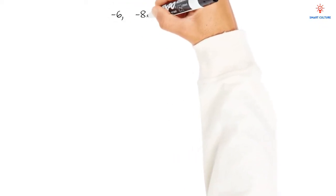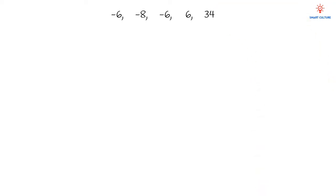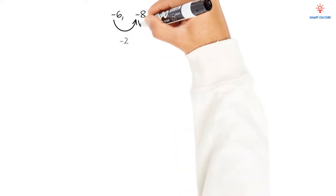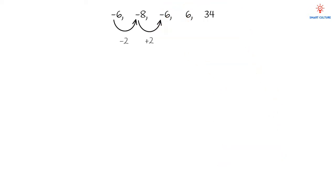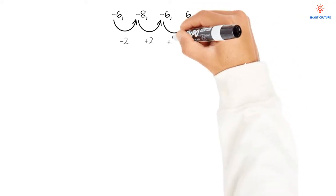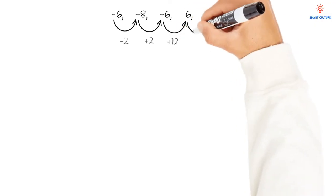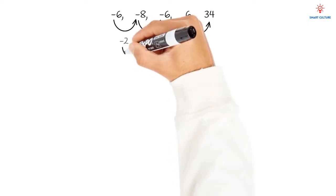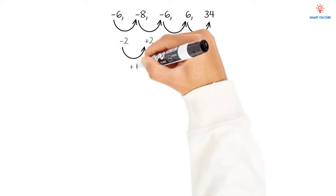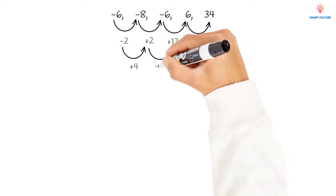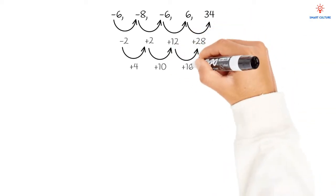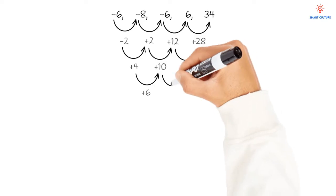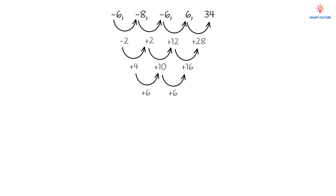Here we have the sequence: -6, -8, -6, 6, and 34. The first differences are: -2, +2, 12, and 28. The second differences are: 4, 10, and 16. Moving on to the third difference: 10 - 4 = 6, and 16 - 10 = 6. So we have a constant third difference of 6, confirming this is a cubic sequence.